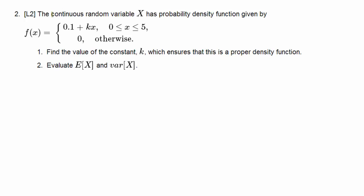So here we have a continuous random variable called X that has a probability density function shown here, 0.1 plus kx, and that's defined in the interval 0 to 5. First question is, what value should k take for this to be a proper density function?